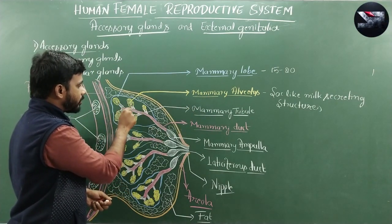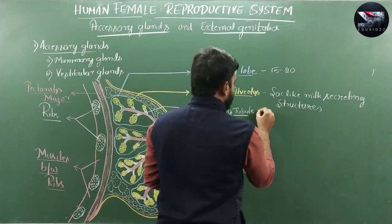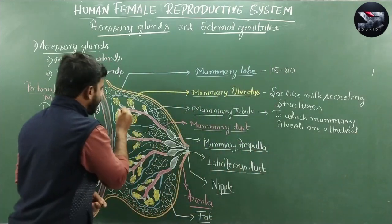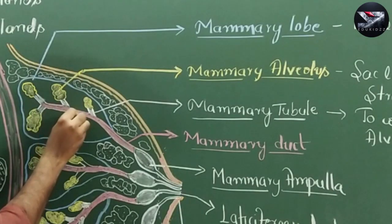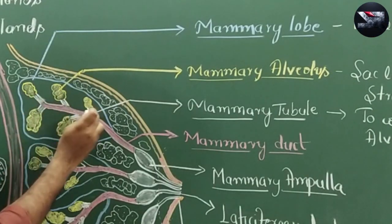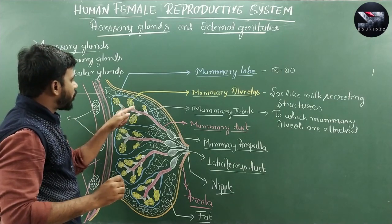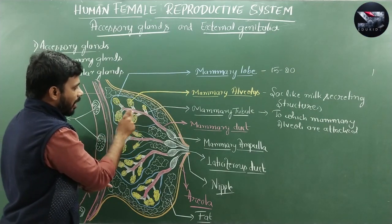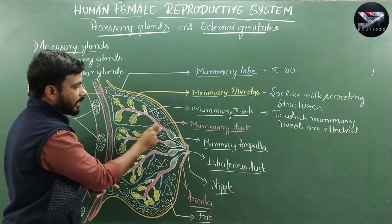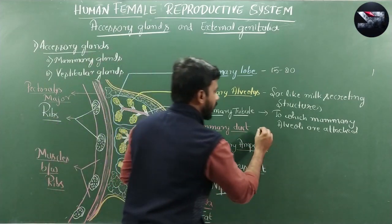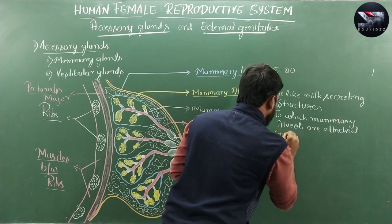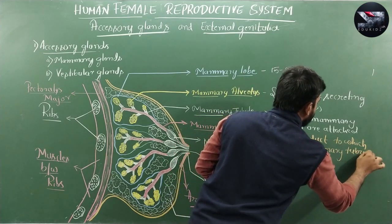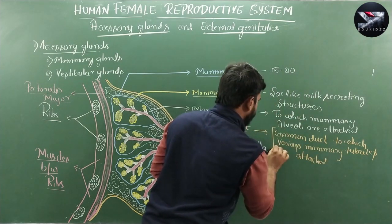From each mammary alveolus a small duct called a mammary tubule arises. Mammary tubules are the structures to which mammary alveoli are connected. Various mammary tubules — you can see five tubules inside one mammary lobe in the diagram — join together into a common duct called the mammary duct.